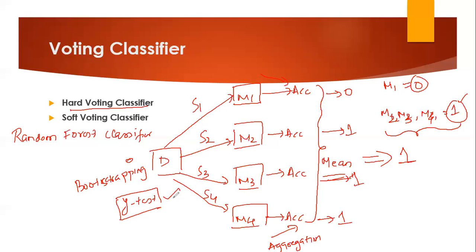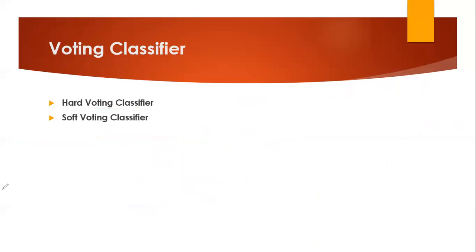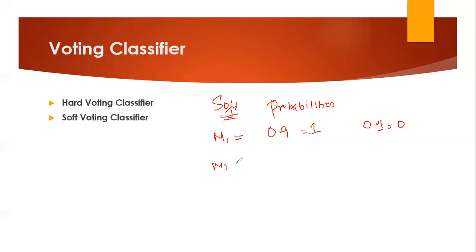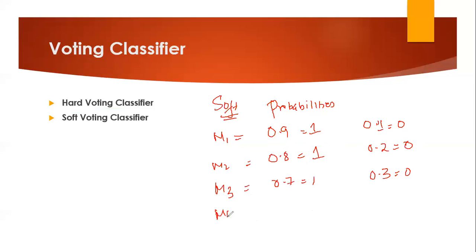Now the question arises: how does soft voting classifier work? In soft voting classifier, there is only one change — instead of giving one output, the soft voting classifier will give us probabilities. Suppose M1 is giving 0.9 probability for class 1 and 0.1 for class 0. M2 is saying 0.8 probability for class 1 and 0.2 for class 0. M3 gives 0.7 for class 1 and 0.3 for class 0. Similarly, M4 says 0.6 for class 1 and 0.4 for class 0. What the soft voting classifier will do is find out the average of all these probabilities.